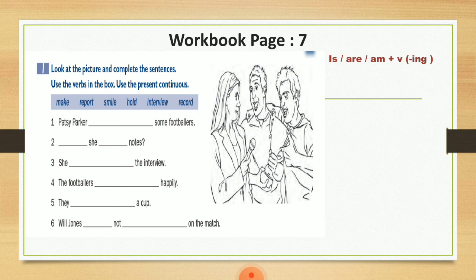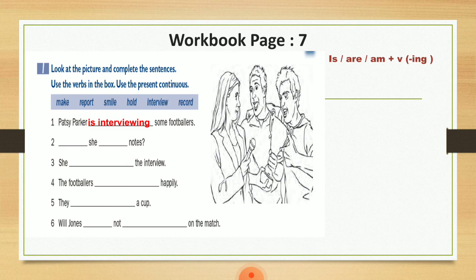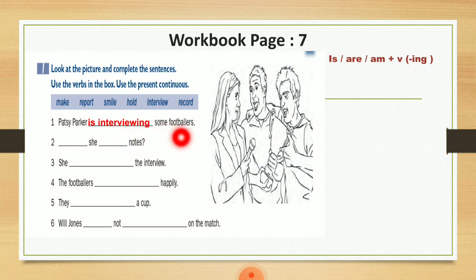Let's start with number one as an example. Patsy Parker is interviewing some footballers. حطينا هون 'is' لأنه كان عندي subject مفرد واستخدمنا الفعل interview لكننا ضفنا له ال-ing. فصارت: Patsy Parker is interviewing some footballers.